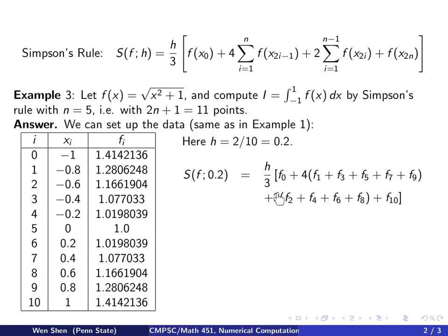And then we can just plug in this formula and work it out. So it's h over 3 and in the bracket is f0, f10. And that's counted once and all the odd ones, f1, f3, f5, f7, f9 add up and they will be multiplied by 4. And the even inner points, f2, f4, f6, f8 is multiplied by 2. And plug in the values that we have in this table and then add them up and you get this number 2.2955778.